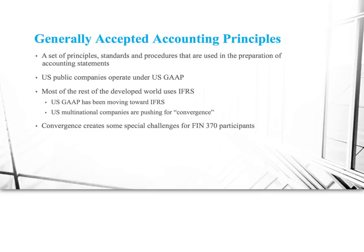U.S. public companies operate under U.S. GAAP. Most of the statements we'll see in this course will be U.S. GAAP, though we'll also see some international statements. Most of the rest of the developed world uses something else. It used to be that U.S. GAAP was considered the best accounting standards in the world, but the world has pretty much left us behind now with international financial accounting standards.